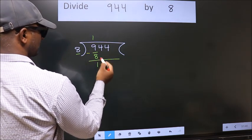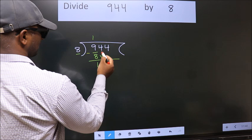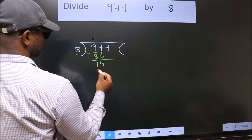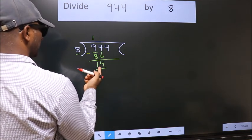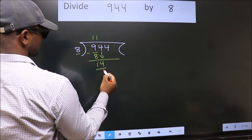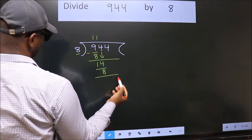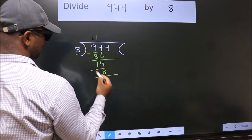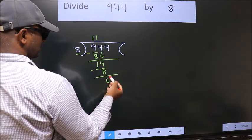After this, bring down the beside number. So, 4 down. So, 14. A number close to 14 in 8 table is 8 once 8. Now, we subtract. We get 6.